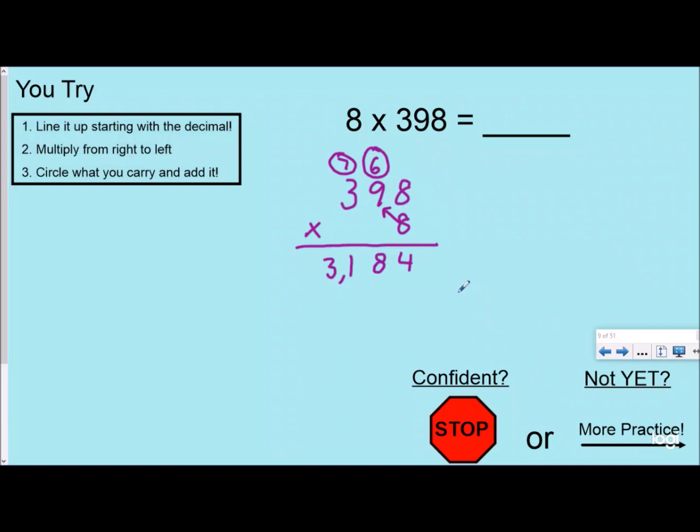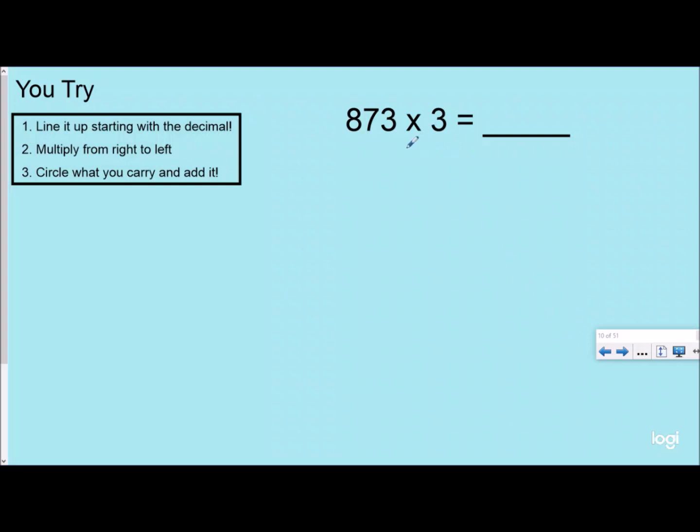Again, if you got it right and you're feeling confident now, you can stop, or you can always watch an extra problem. So here's our last one. Go ahead and pause the video and try it out, and then push play, and we'll see how you did. So hopefully you just paused it and tried it. So we have 873 times 3. And so I have 3 times 3, which is 9. 3 times 7, which is 21. So I'm going to regroup my two groups of 10 that I had over my hundreds place and put my leftover one down here. And then 3 times 8 is 24, plus 2 is 26. And so your answer or your product should be 2,619.